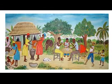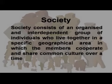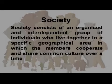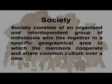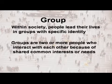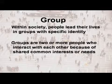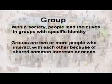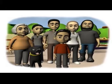All interactions take place in society. A society consists of an organized and interdependent group of individuals who live together in a specific geographic area, in which the members cooperate and share a common culture over time. Within society, people lead their lives in groups with specific identity. Groups are two or more people who interact with each other because of shared common interests or needs. One of the important social institutions is family.